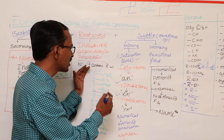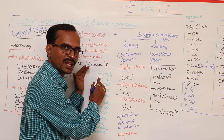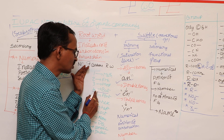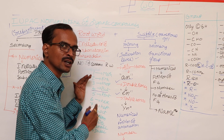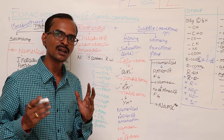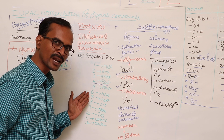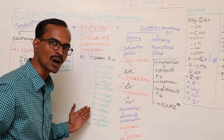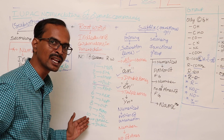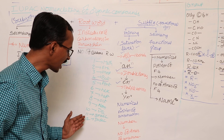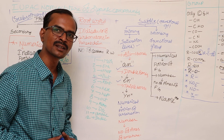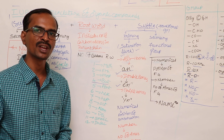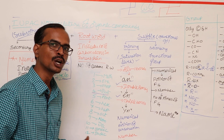If the parent chain has one carbon atom, the root word is meth. If two carbon atoms, eth. Three carbon atoms, prop. Four carbon atoms, but. Five carbon atoms, pent. Six carbon atoms, hex. Seven carbon atoms, hept. Eight carbon atoms, oct. Nine carbon atoms, non. Ten carbon atoms, dec. Eleven carbon atoms, undec. And finally, twelve carbon atoms, the root word is dodeca.